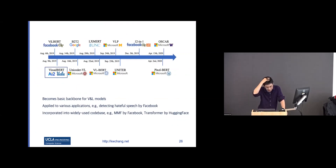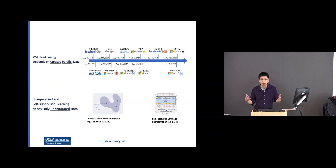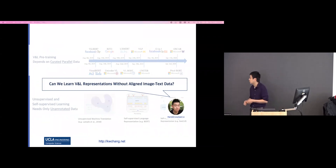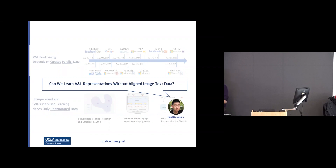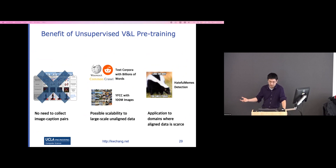Since then, many different models have been proposed, most leveraging image caption data to learn visual-language representations. But we were interested in whether we can learn that representation without caption data — similar to unsupervised machine translation. If you have supervised alignment between two languages, it's easy to train a model to align both. But if you don't have aligned data, can you train an image model and a text model using the same transformer and have them align by themselves? This would be useful for domains without aligned data.